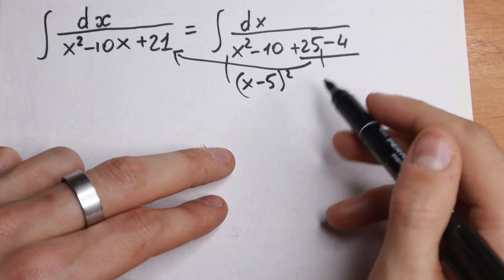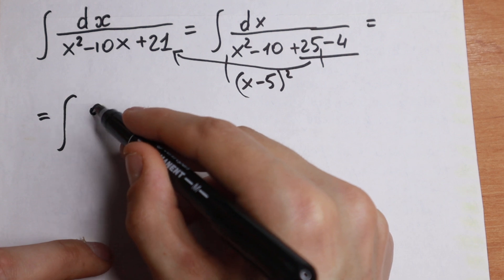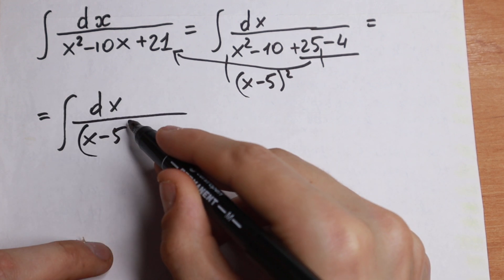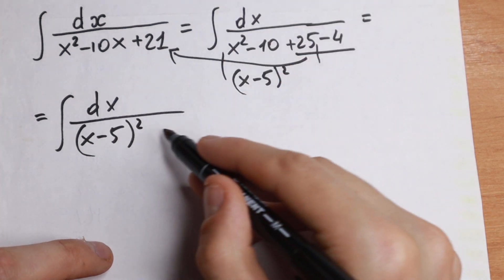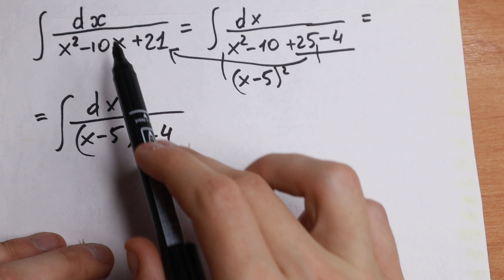This is our x minus 5 square. And take a look. If we rewrite this, we will have an interesting case: dx divided by x minus 5. So we group these elements, and minus, and minus 4. So we rewrite this like that.